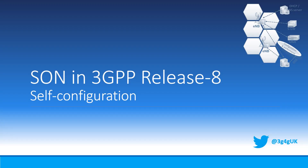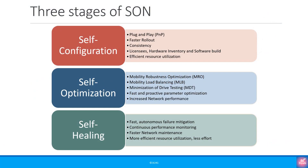Hey everyone. Continuing from our last video, in this one we will look at the SON features that came as part of 3GPP Release 8. We already discussed the three stages of SON in the earlier video. Just to recap, they are self-configuration, self-optimization, and self-healing. They come one after another, so 3GPP decided to go with self-configuration as part of 3GPP Release 8.